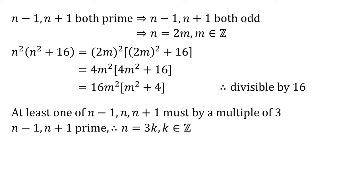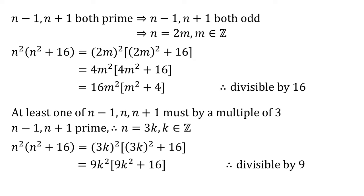So we can write this as 3k where k is an integer, and substituting this into our n squared n squared plus 16 we get 3k all squared times 3k all squared plus 16. Squaring our brackets gives us 9k squared times 9k squared plus 16 which is divisible by 9 because we've got the 9 at the beginning there.